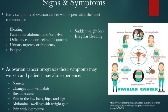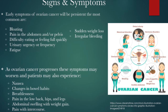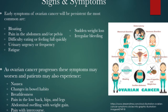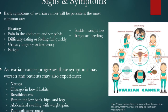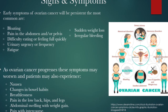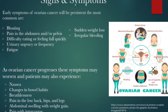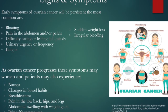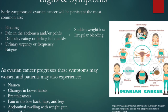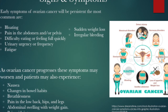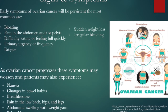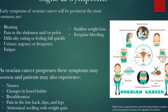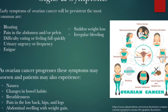In more advanced stages, symptoms such as nausea, changes in bowel habits, breathlessness, pain in the lower back, hips and legs, abdominal swelling due to ascites, weight gain, and pain with intercourse may also occur. These symptoms are usually caused by benign disease processes or possibly even cancers of other organs. When symptoms such as these are persistent and intense, occurring more than 12 times in one month for 12 months or less, they should be evaluated by a gynecologist.